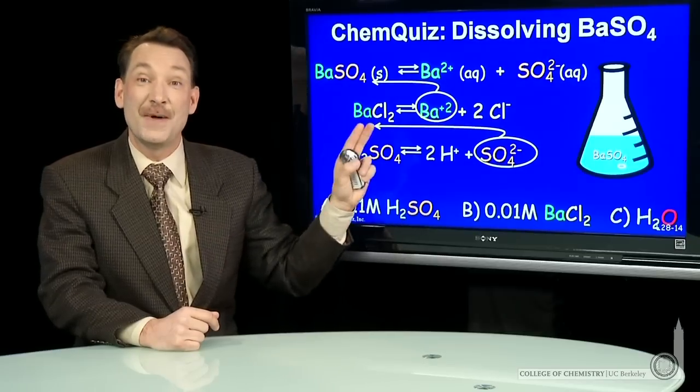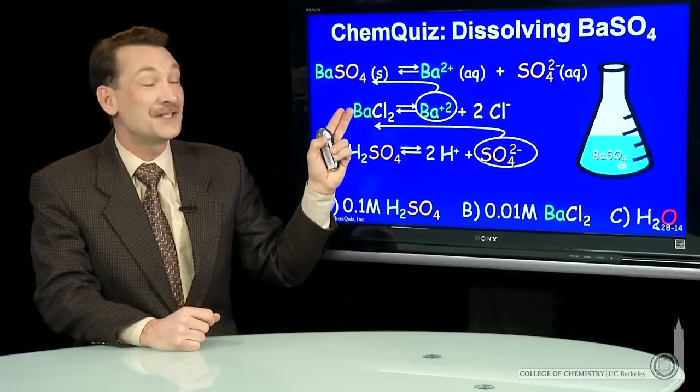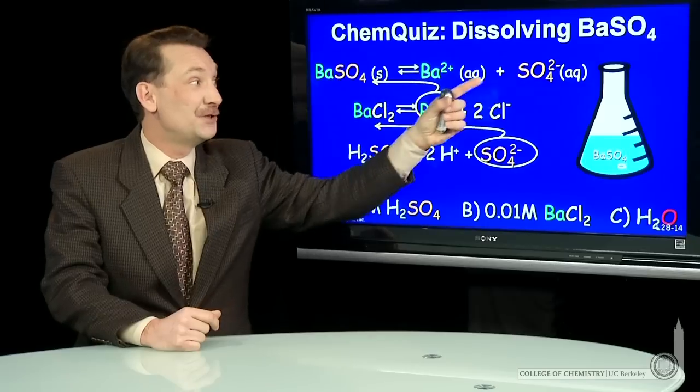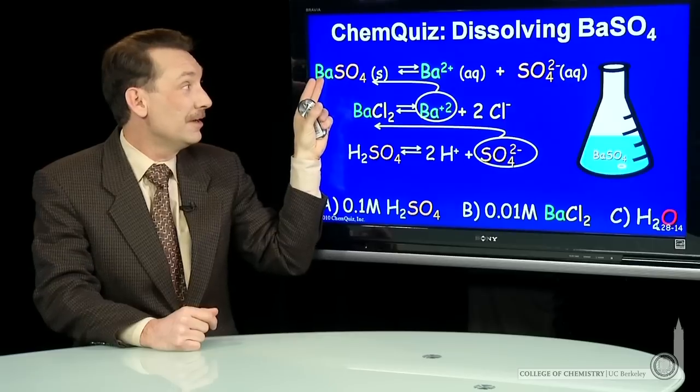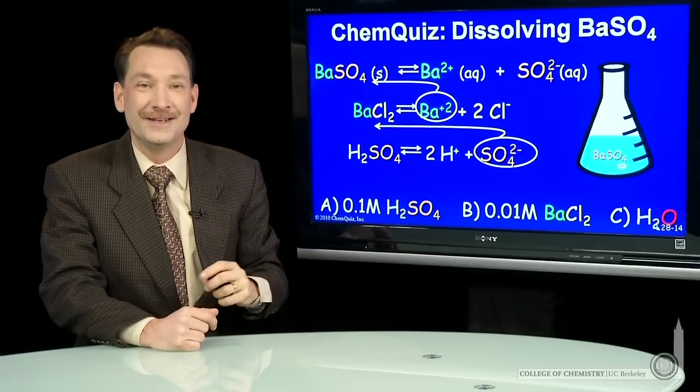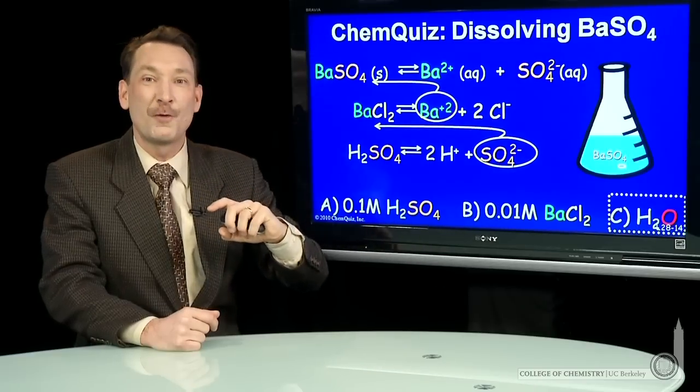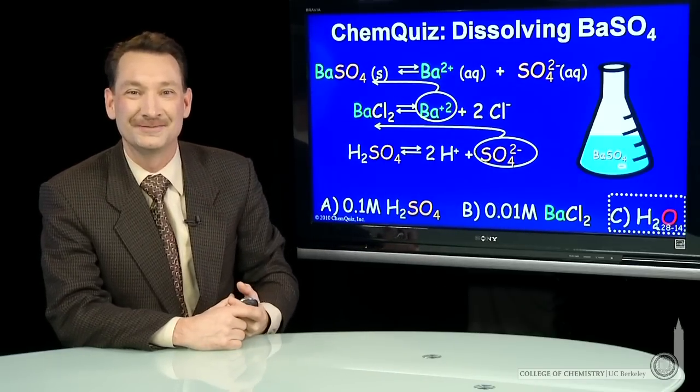So in this case, the best strategy is simply add more water, increase the concentration. That gives you diluting these concentrations, making them smaller. By Le Chatelier's principle, I'll shift to make these concentrations higher again. So in this case, add more water to dissolve a one milligram speck of barium sulfate.